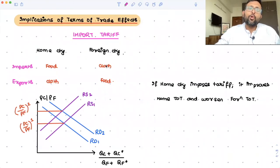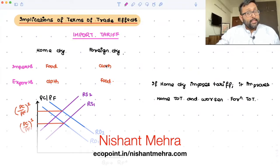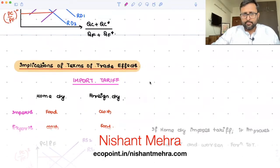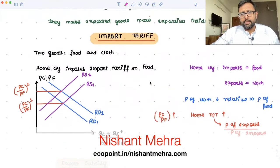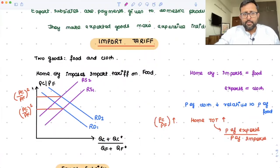In this recording, we're going to talk about what are the implications of the terms of trade effects. When the home country is going to impose a tariff, it is definitely going to benefit the home country, because the home country's terms of trade is increasing. PC by PF is increasing.